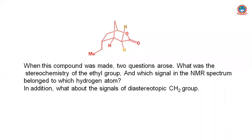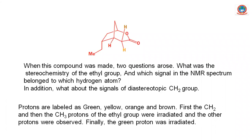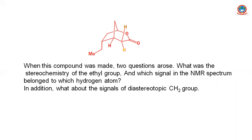Now consider another example: determining whether, on performing the Baeyer-Villiger reaction, a specific product forms — whether oxygen insertion takes place from one side or another. Suppose this is the final product; we have an ethyl group and we need to determine if it is endo or exo. We also have protons at various positions and the question is which proton belongs to which signal, since many protons are similar in this compound.